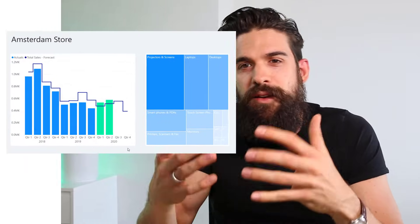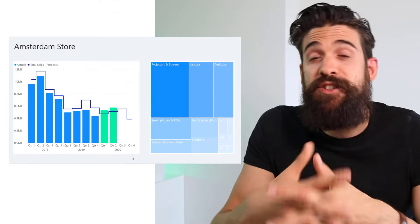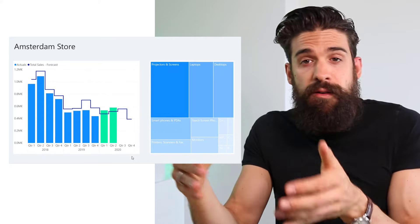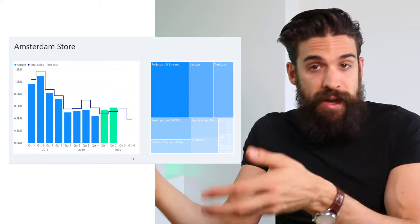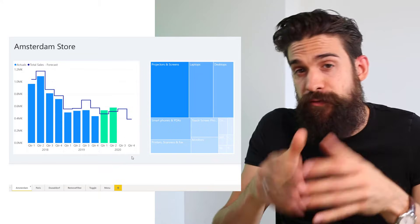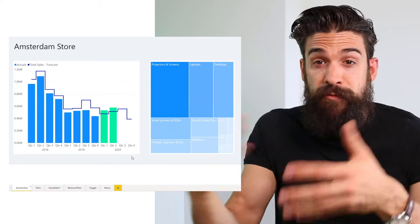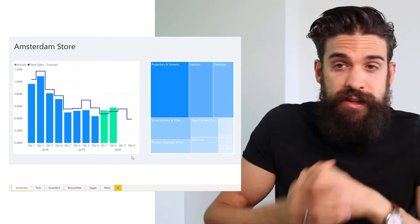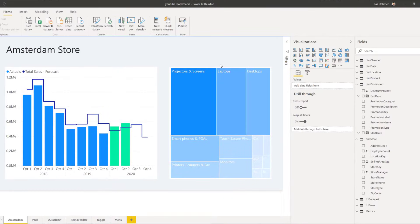Now let's have a look at how to create a bookmark and five different applications of how to use them. Here we have a Power BI report that shows the sales numbers for different stores on different pages. What we are going to do is create bookmarks for each page so that we can flip through them using a slideshow.